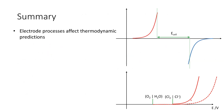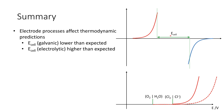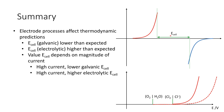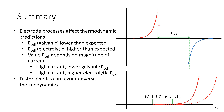To summarize: electrode processes fundamentally affect thermodynamic predictions. In a galvanic cell, the actual cell potential is considerably lower than expected, while for an electrolytic cell, the cell potential is higher than expected, because of the overpotentials required to drive current. The value of the cell potential fundamentally depends on the magnitude of the current — higher current means lower galvanic cell potential, and higher current through an electrolytic cell means a higher required potential. Faster kinetics can favour adverse thermodynamics: if a reaction forms faster, we will get more of it. Through modification of our electrodes, we can increase the exchange current density to favour particular processes to our advantage.